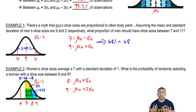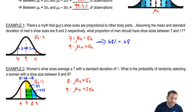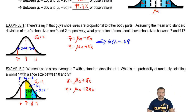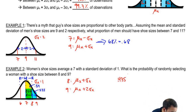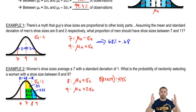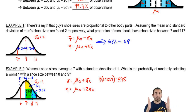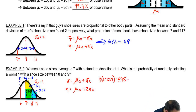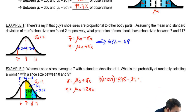We want just the area between 8 and 9, which is both on the right side. We take the bigger area from 7 to 9 (0.475) and subtract the smaller area from 7 to 8 (0.34). So 0.475 minus 0.34 gives us 0.135.